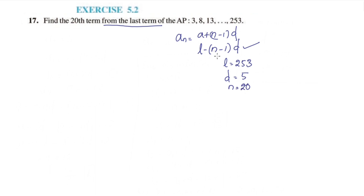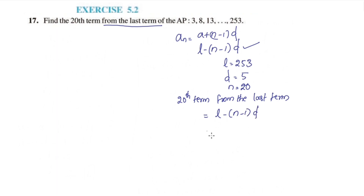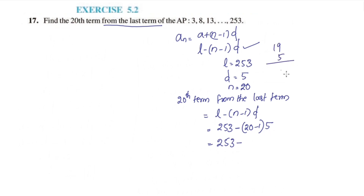Now we will substitute into the equation. The 20th term from the last term is equal to l minus (n minus 1) into d. Here, l is 253 and n is 20. So we get 253 minus (20 minus 1) into 5, which is 253 minus 19 into 5.